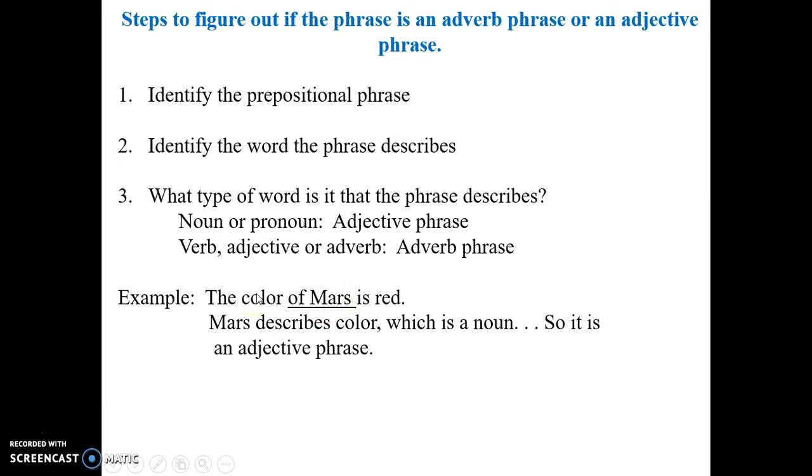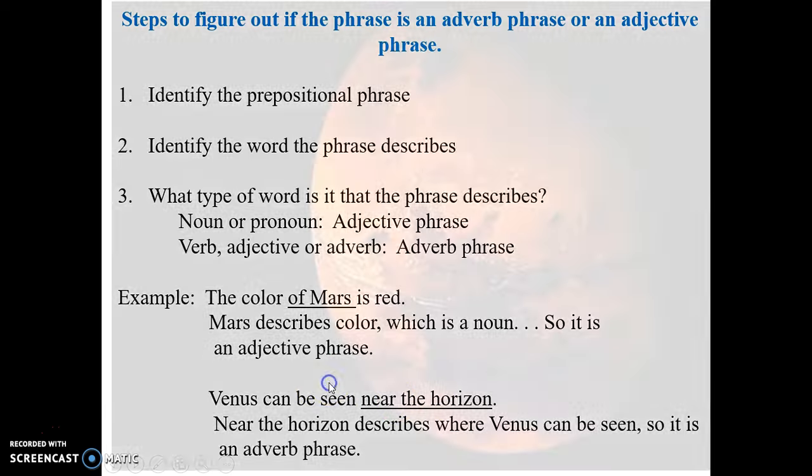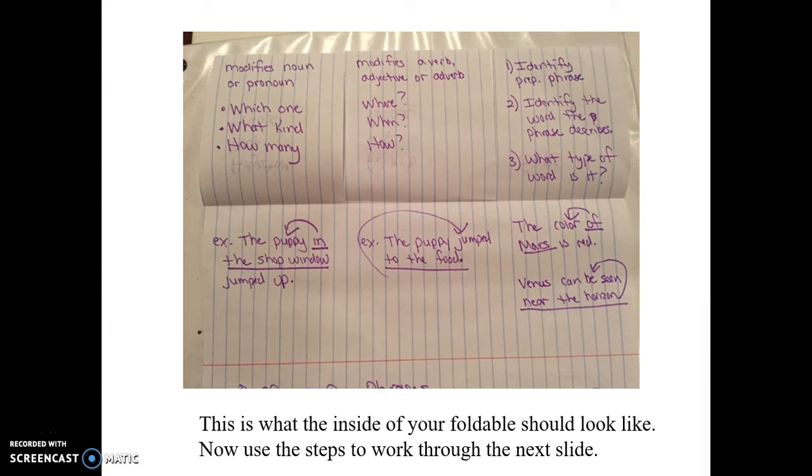An example. These three steps should be written at the top of your flap. And then this is your first example. The color of Mars is red. Of Mars is our prepositional phrase. It modifies color. Color is a noun. Therefore, of Mars is an adjective phrase. Then we've got Venus can be seen near the horizon. Near the horizon, the prepositional phrase, describes where Venus can be seen. Since that's a verb phrase, near the horizon is an adverb clause.